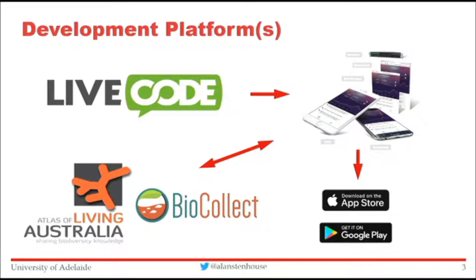We used the Atlas of Living Australia's BioCollect citizen science platform as a back-end for storing the data. It provides an API for you to both store data and read data back. It also provides a platform for people to submit their own observations separately from an app. And at the end of all this, you still need to roll it out to the app stores — Apple App Store and Google Play.